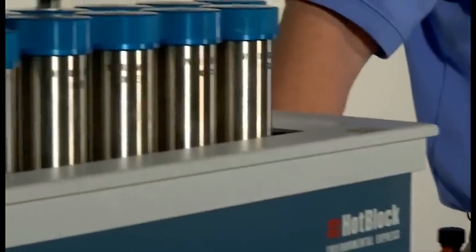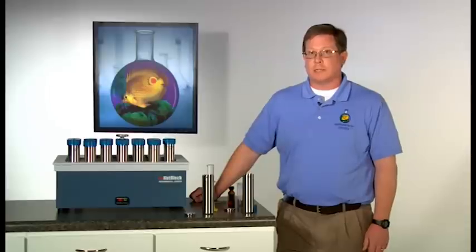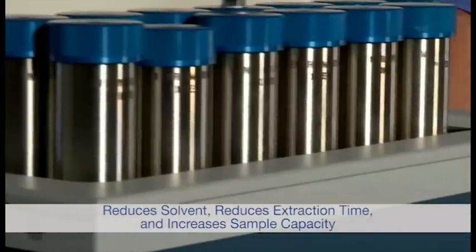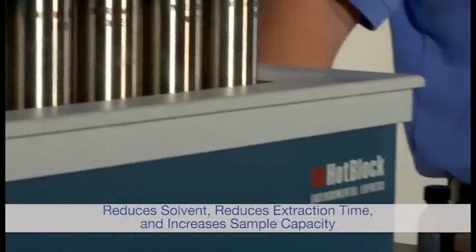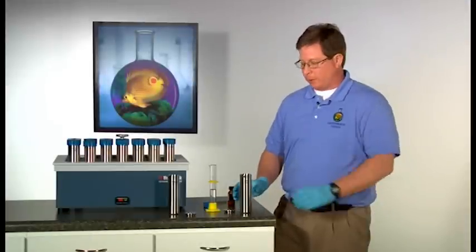Method 3546 has several advantages over more traditional extraction techniques such as Soxhlet and Sonication. It requires far less solvent, reduces the overall amount of extraction time, and allows one to extract up to 35 samples at once. The first step is to weigh 10 to 30 grams of sample into the soil extraction cell.